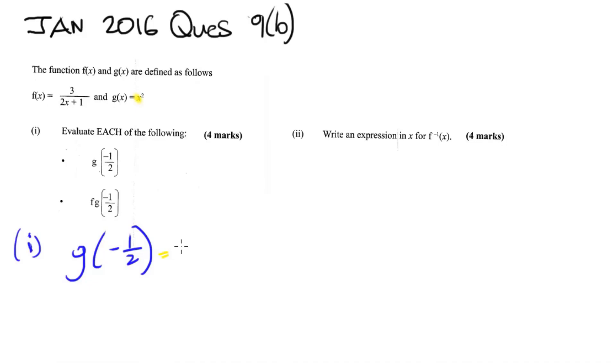So g of negative 1 half is going to be negative 1 half all squared. And negative 1 half all squared is going to be equal to negative 1 half times negative 1 half. Negative 1 times negative 1 is 1. 2 times 2 is 4. So that means g of negative 1 half is equal to 1 quarter. Very important to remember that we square all of this negative 1 half, all of our input. So that means we're going to square all of negative 1 half.